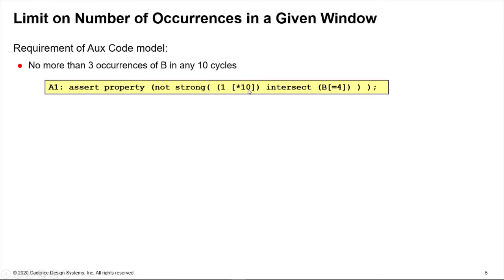One, that's true always, repeated 10 consecutive cycles intersected with B occurring four times non-consecutively, so it's not necessarily consecutively, and I'm saying not here. So that's, I'm saying I should have no more than three. That was a requirement. So I should not observe four occurrences within any 10 cycle window. And for reasons we won't discuss here I have to say strong for this thing to work.